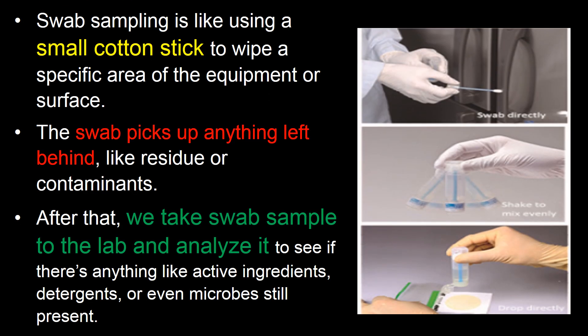Swab sampling is like using a small cotton stick to wipe a specific area of the equipment or surface. The swab picks up anything left behind, like residue or contaminants. After that, we take the swab sample to the lab and analyze it to see if there is anything like active ingredients, detergents, or even microbes still present.